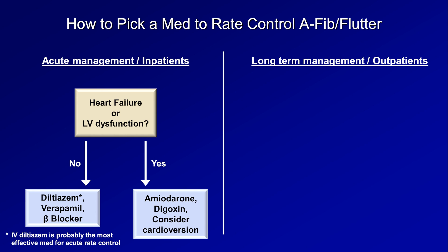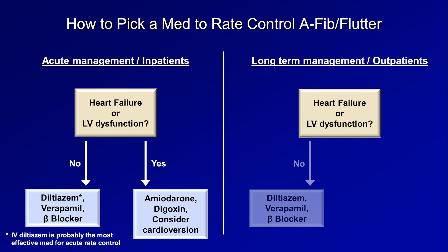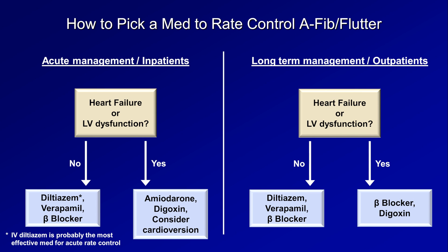For outpatients or a long-term rate control strategy, once again consider heart failure or LV dysfunction. If there's none, diltiazem, verapamil, and beta blockers are all appropriate options. If there is heart failure or LV dysfunction, beta blockers are clearly first line, with digoxin a distant second. Remember that we want to avoid long-term amiodarone due to its toxicity, like pulmonary fibrosis.